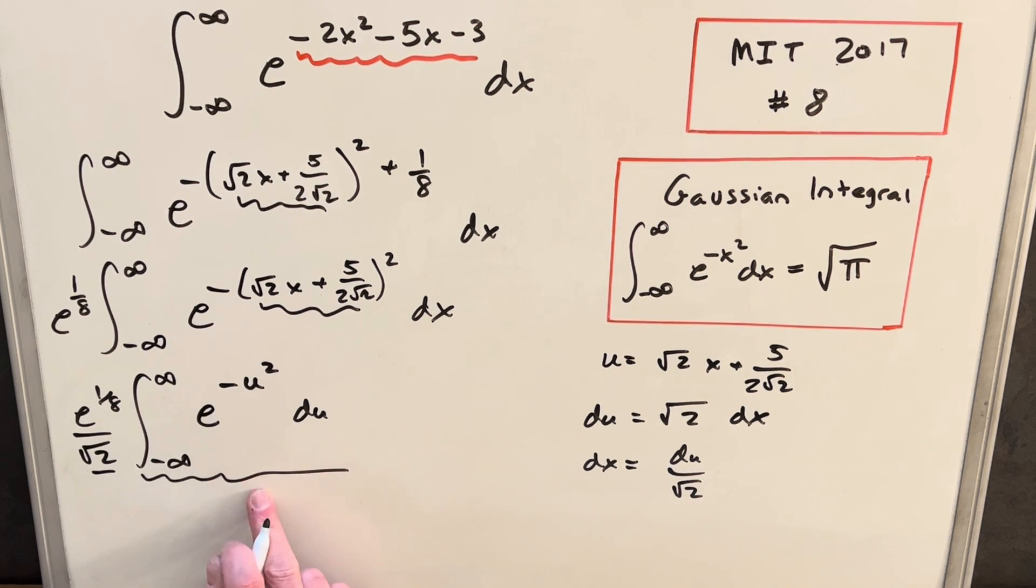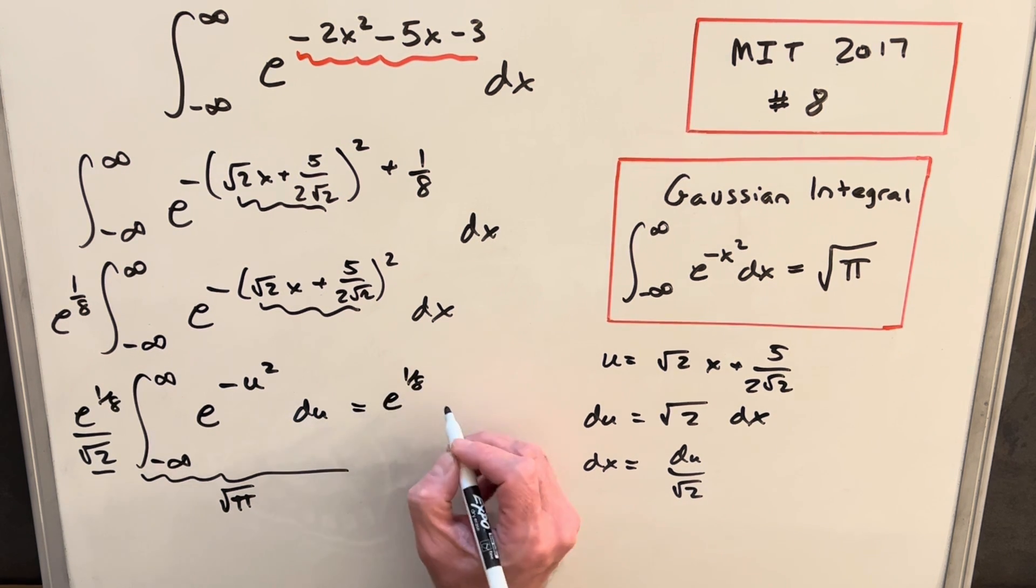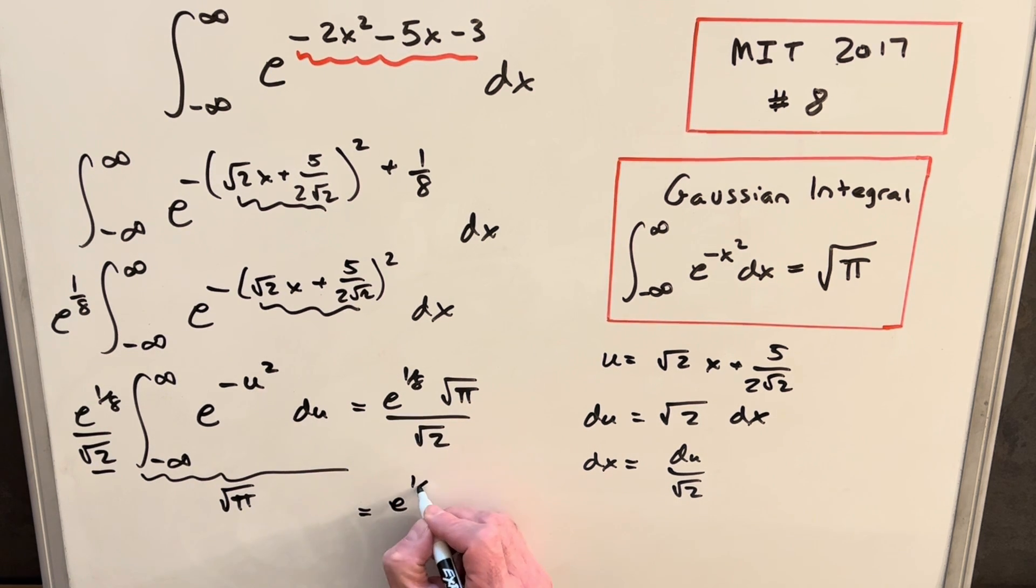But then now we have it exactly we want. For this thing, we know the value. It doesn't matter the variable name in a definite integral. So this whole piece right here is square root of pi. So for this, we're going to have e to the 1 over 8 square root of pi over square root of 2. And then just to make it neat, I'm going to write it as e to the 1 over 8 big square root of pi over 2.